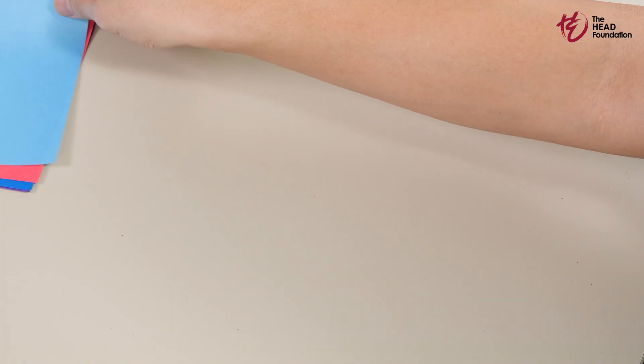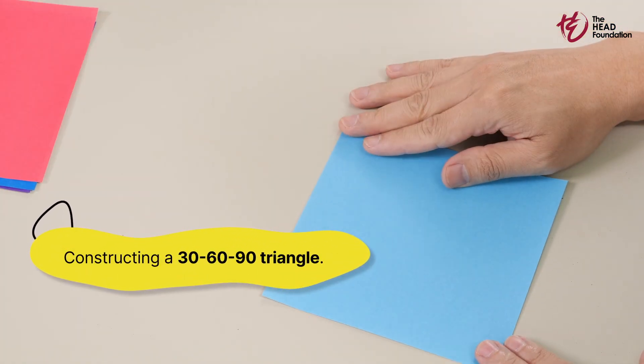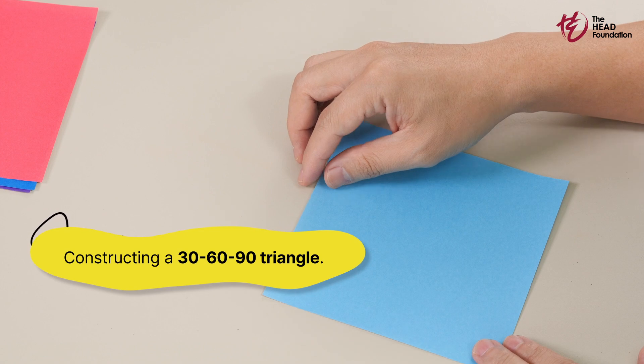Let us start by constructing a 30-60-90 triangle. Instead of relying on a protractor for angle measurements, we will use paper folding to precisely create this triangle. Once you've folded your triangle, we'll dig into the reasoning behind its properties.